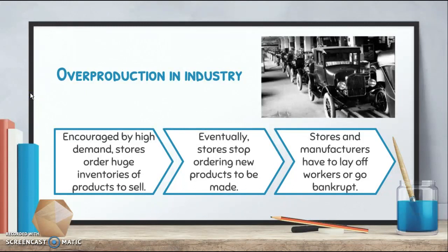We also had overproduction in industry. There was a really high demand for things in the 1920s — that's why farms and industries overproduced, because a lot of people were buying things. So companies were producing a lot of things to meet that demand. Stores were ordering huge inventories — huge amounts of items to sell — and just keeping these items in the back room.